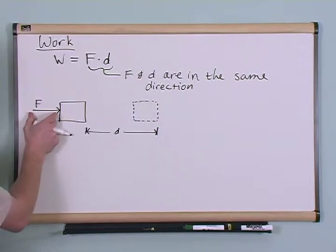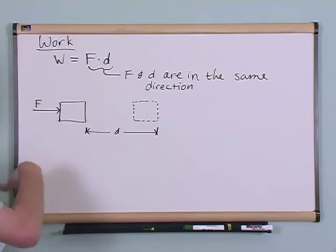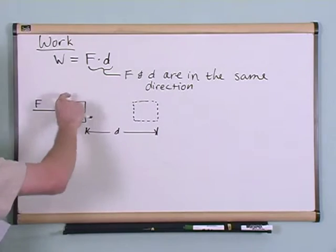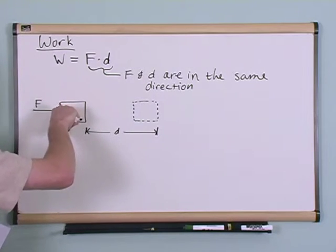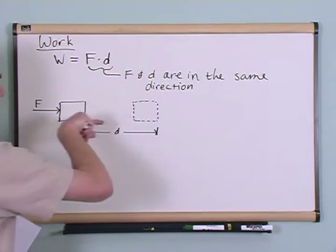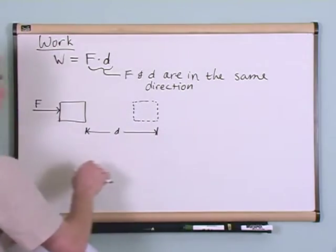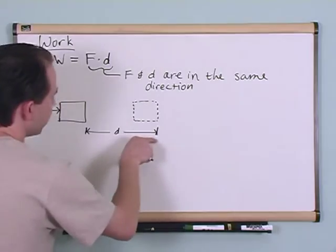So I'm pushing on this block with some force. The block accelerates and moves because of that, and it goes through some distance. The entire time this block is moving from point to point, I'm still pushing on it with that force, so as the block moves, I'm still pushing on it as it moves. And it moves through some distance d.